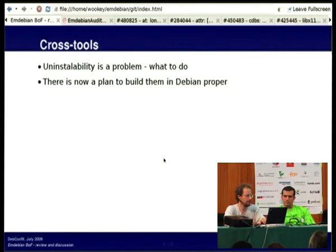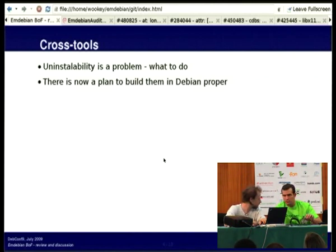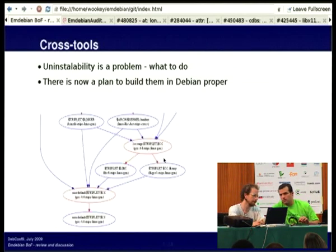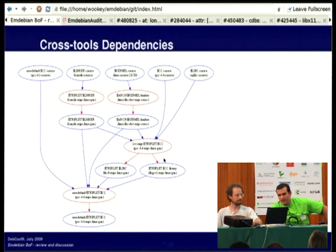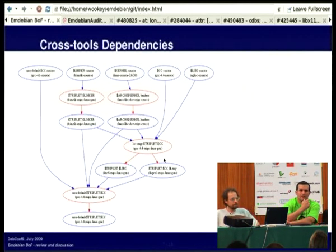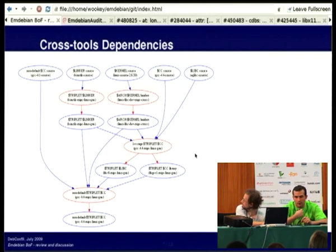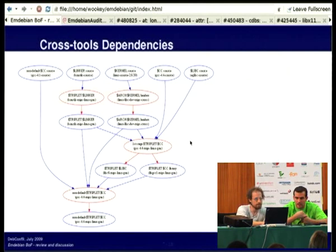There's this plan to build cross-compilers in Debian. Do you want to say something about the uninstallability problem? We have a great mechanism to have proper cross-compilers under Debian, instead of having them in Mdebian repositories.